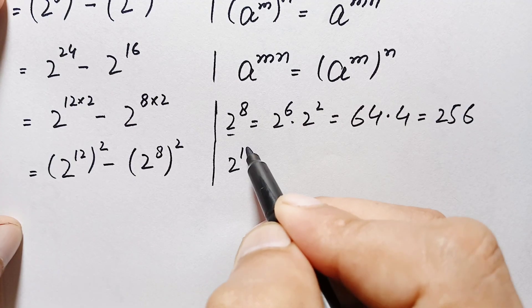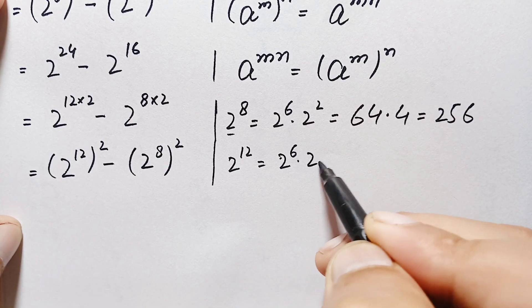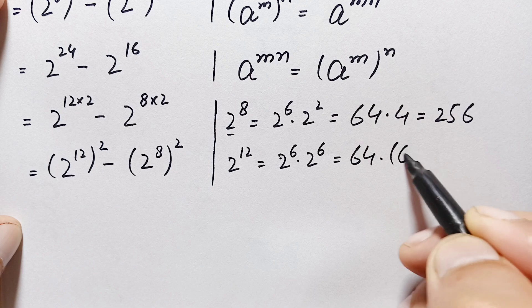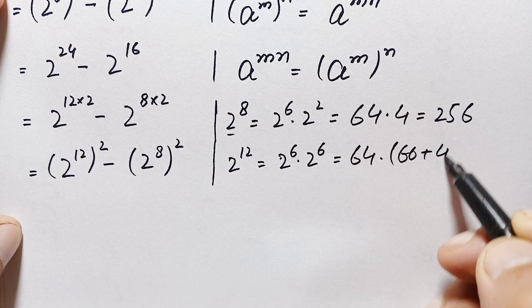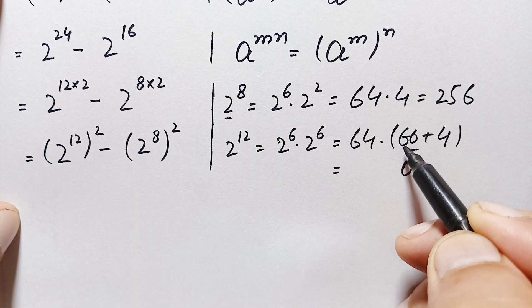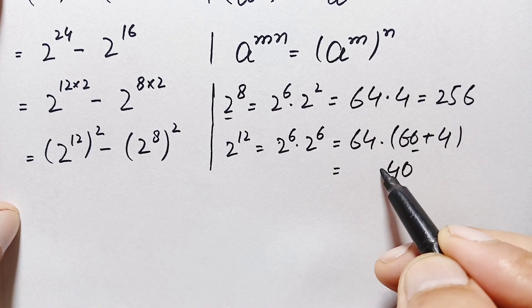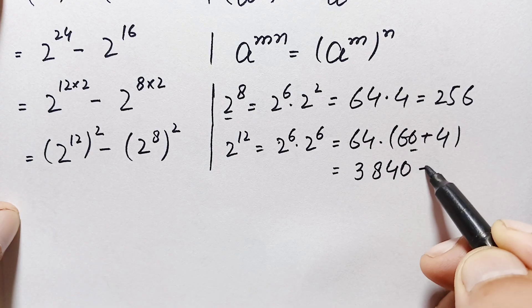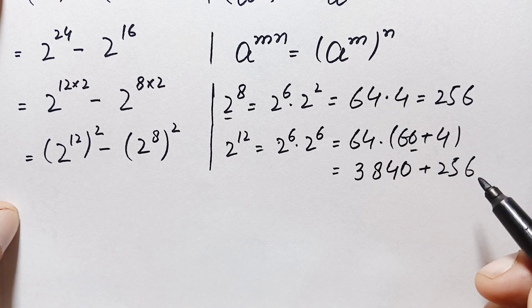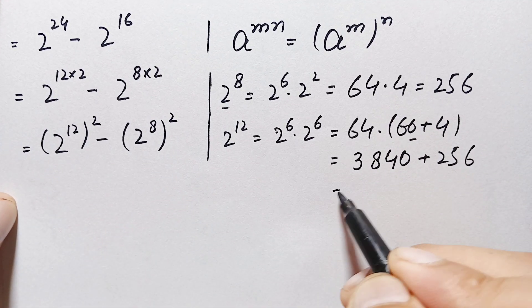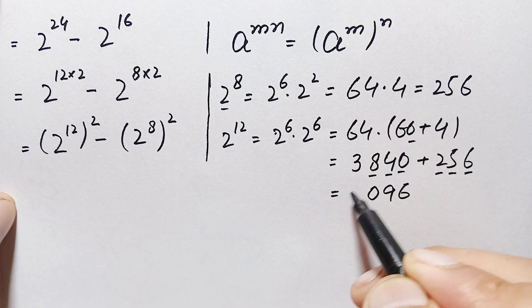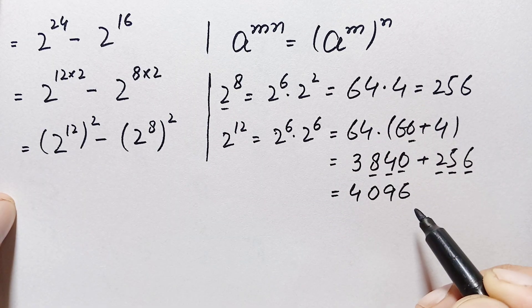Now what is the value of 2^12? 2^12 = 2^6 × 2^6 = 64 × 64. We write the second 64 as 60+4. 64×60: 64×0=0, 64×6=384, giving 3840. 64×4: 4×4=16, carry 1; 4×6=24+1=25, giving 256. Adding 3840 + 256: 0+6=6, 4+5=9 — wait, 0+0=0, 8+6=... the result is 4096. So 2^12 = 4096.